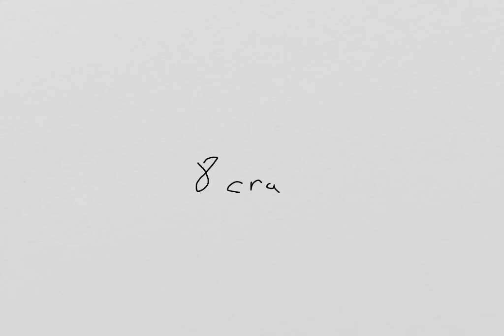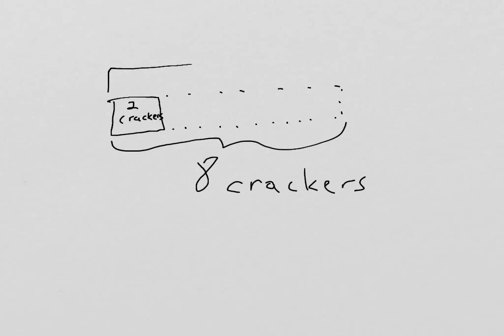In this problem, we have eight crackers again. The difference is that instead of sharing it between two friends, we are giving two crackers to each kid, and the question we're asking is how many times can we do that? I have eight crackers, that's my total, and I have two crackers in each group. But the question I'm asking is how many groups can I make that are like that? I know my total. I know my size of the group, but I don't know the number of groups.